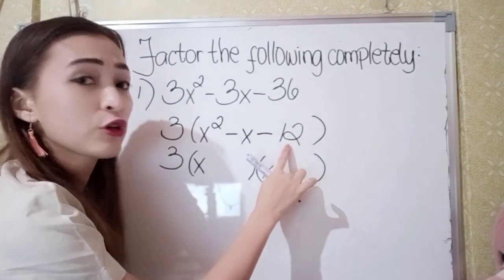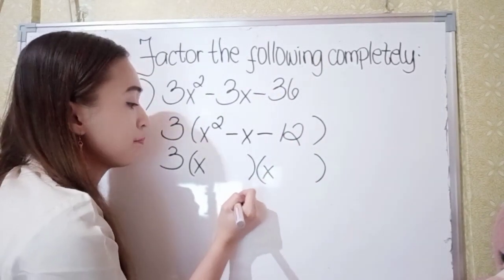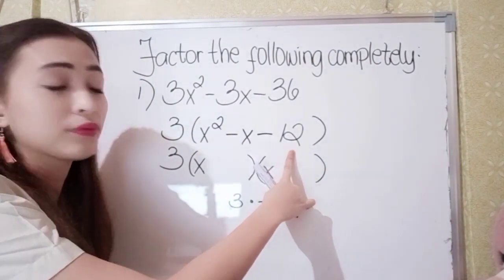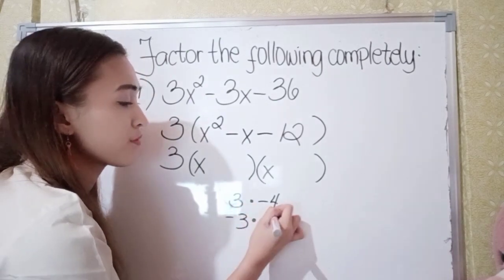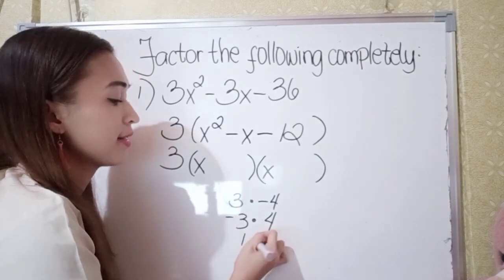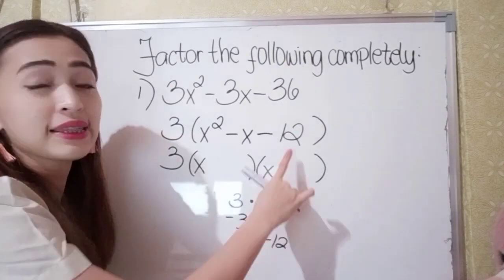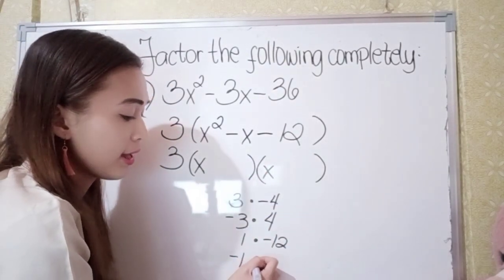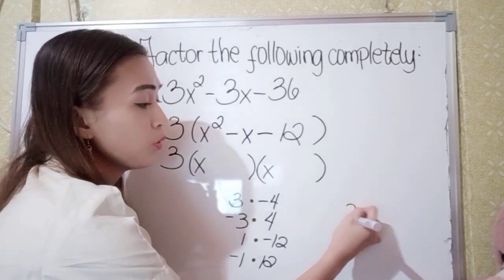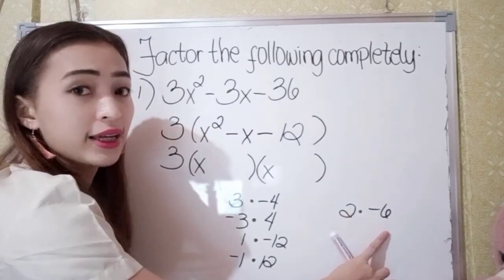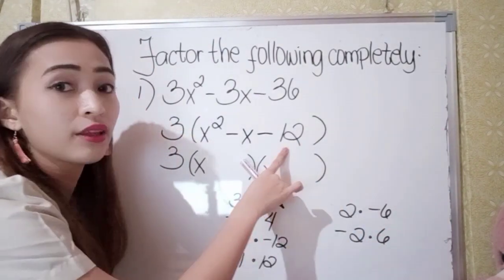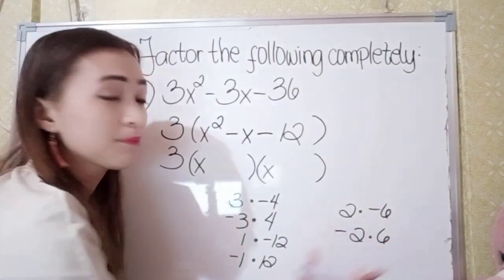The factors of negative 12 can be: positive 3 times negative 4 (equals negative 12), negative 3 times 4 (equals negative 12), 1 times negative 12 (equals negative 12), negative 1 times 12 (equals negative 12), 2 times negative 6 (equals negative 12), or negative 2 times 6 (equals negative 12). These are the factors of negative 12.